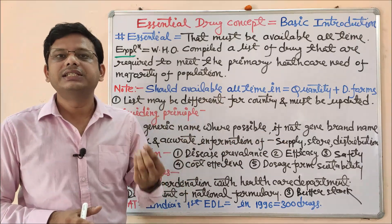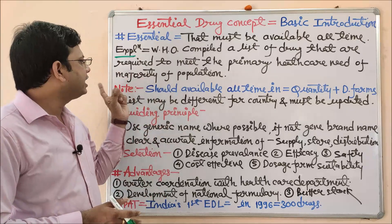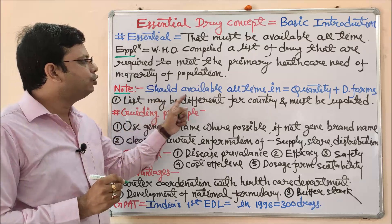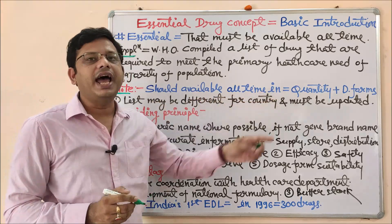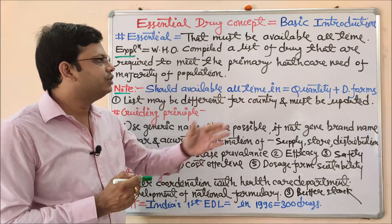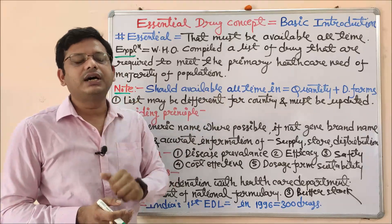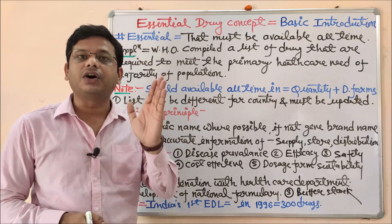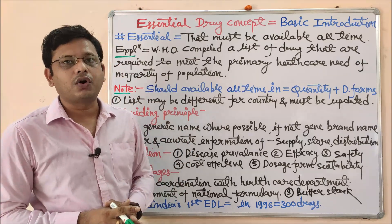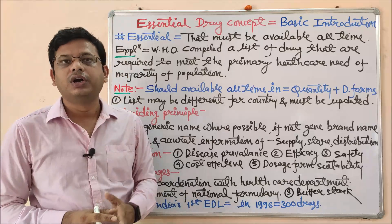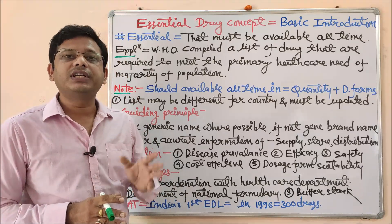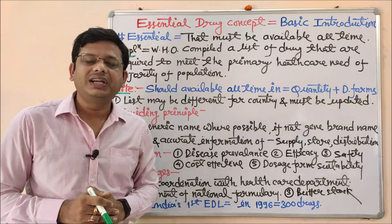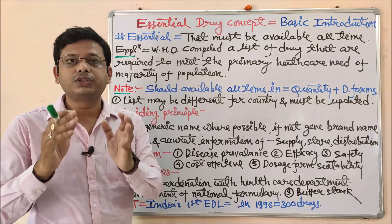An important note: essential drugs should be available at all times in adequate quantity as well as in suitable dosage forms. The quantity must be sufficient at all times — this is called buffer stock. Buffer stock means the stock which has to be kept constant at all times. For example, if I have 20 tablets and the buffer stock level is 10 tablets, I can issue tablets only down to that level.